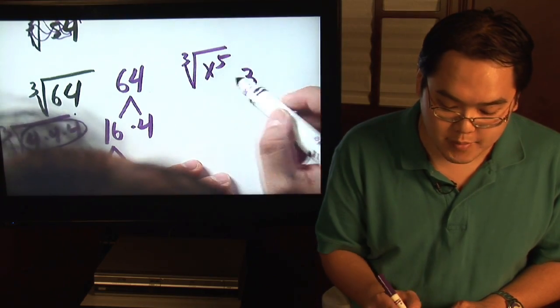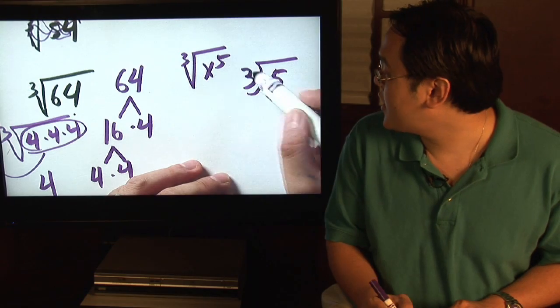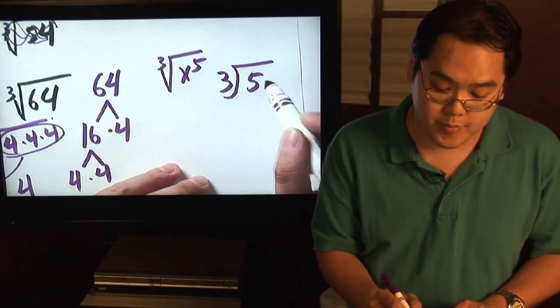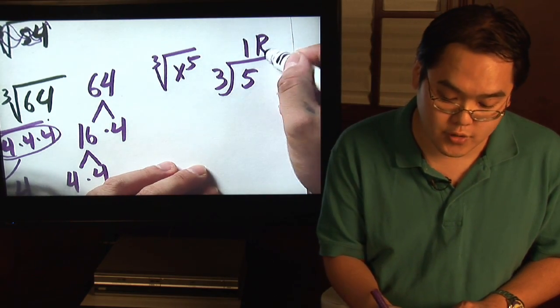You take the outside number, which is a 3, and you divide it into the inside exponent, which is the 5. What's 3 going into 5? Well, 3 goes into 5 one time, remainder 2.